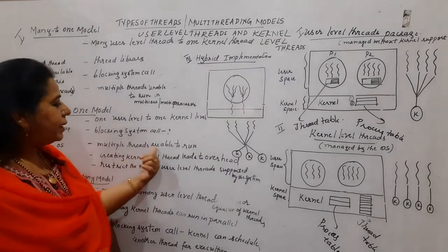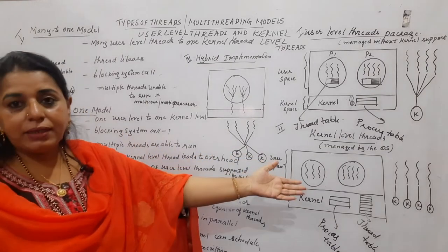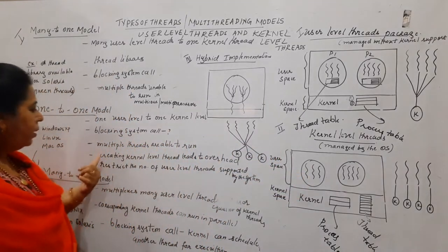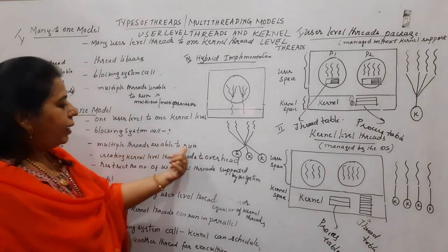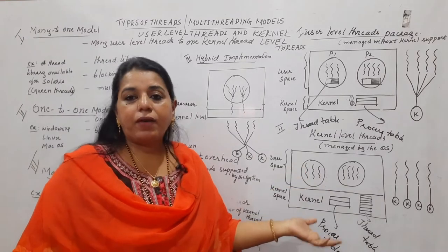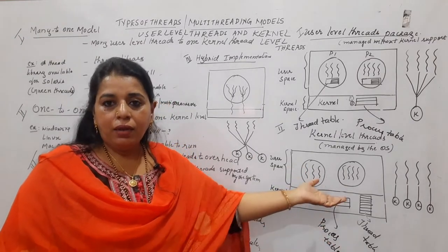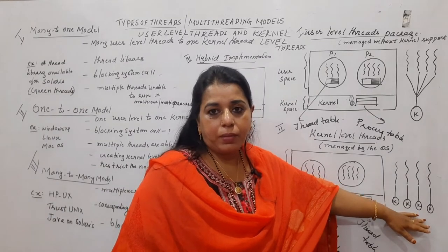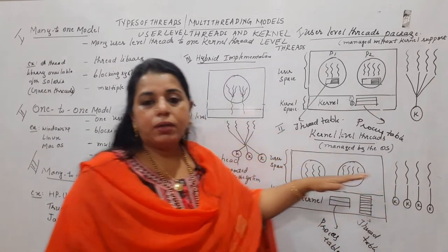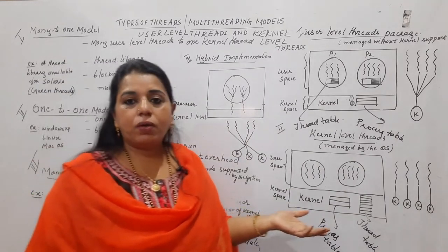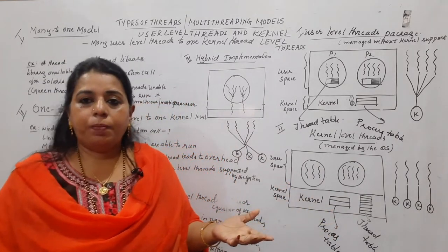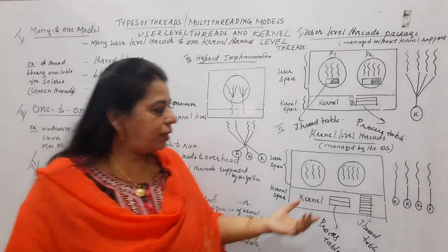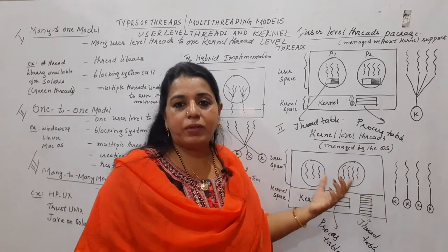Multiple threads are able to run in the one-to-one model. Even if a thread makes a blocking system call, the other threads are able to run. This depends on how many processors the machine has — if the system has more than one processor, threads can run in parallel. The number of threads a user can create depends on how many processors the machine has.